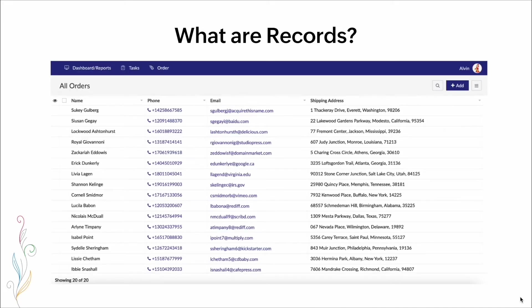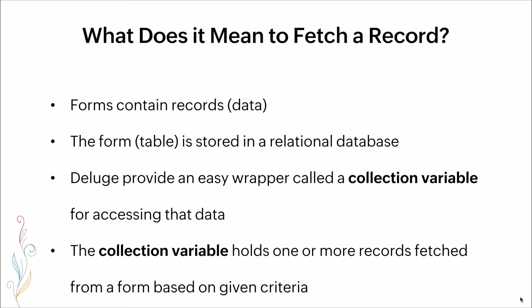Here is a visual representation of what records look like. So what does it mean to fetch a record? Forms contain records or data. The form or table is stored in a relational database. Deluge provides an easy wrapper called a collection variable for processing that data, and that collection variable holds one or more records fetched from a form, based on a given criteria.